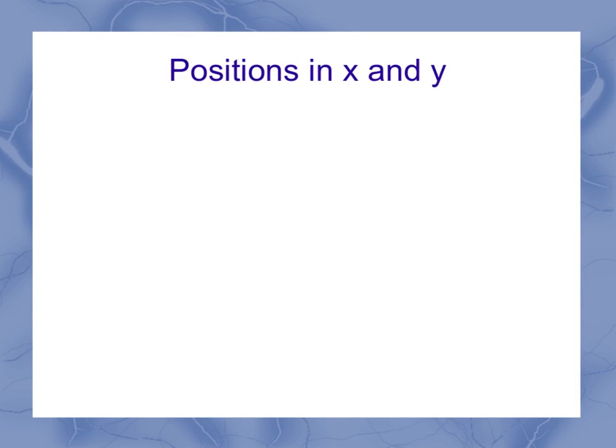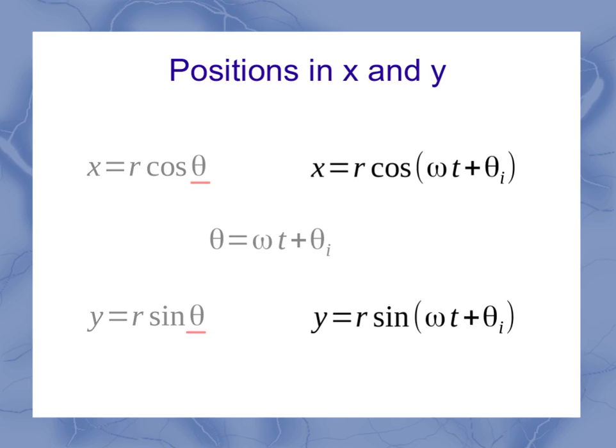So let's look at these positions in x and y. I've got my theta, and now I've got my theta equation. I'm going to combine that in there. And what that's going to give me is these two equations from my x and y, r cosine omega t plus theta initial, and r sine omega t plus theta initial.